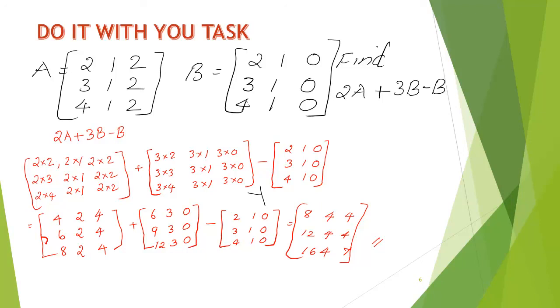At 3B, every element of matrix B should be multiplied by 3, minus B minus matrix B. That is what we have done here. So, we get 2 into 2, 2 into 1, 2 into 2, 2 into 3, 2 into 1, 2 into 2, 2 into 4, 2 into 1, 2 into 2, plus 3 into 2, 3 into 1, 3 into 0, 3 into 3, 3 into 1, 3 into 0, 3 into 4, 3 into 1, 3 into 0, minus 2, 1, 0, 3, 1, 0, 4, 1, 0.